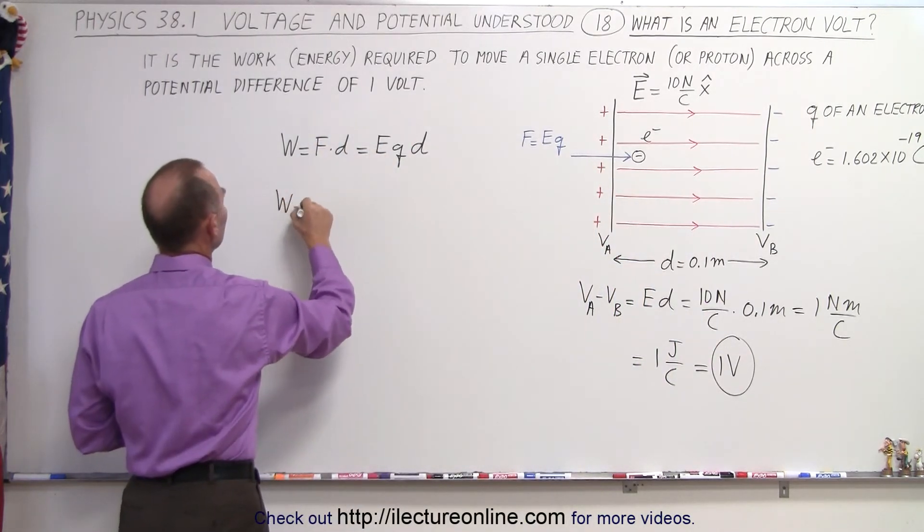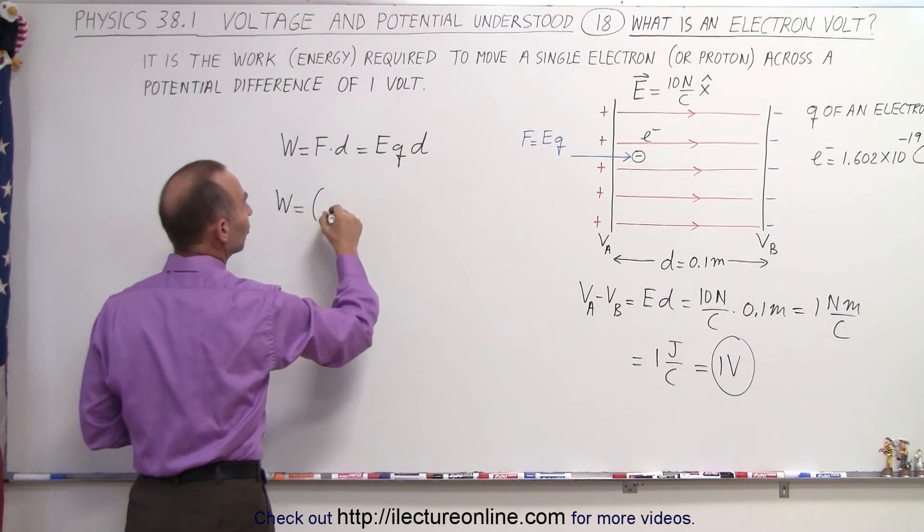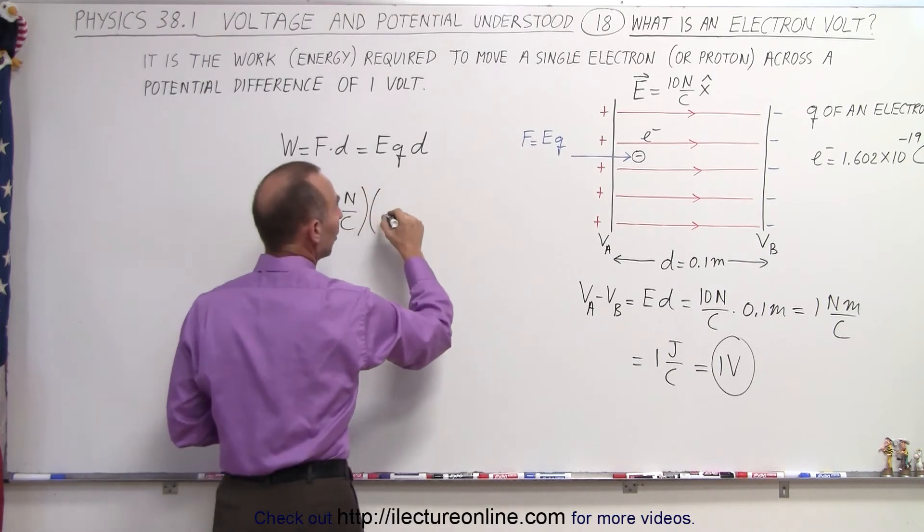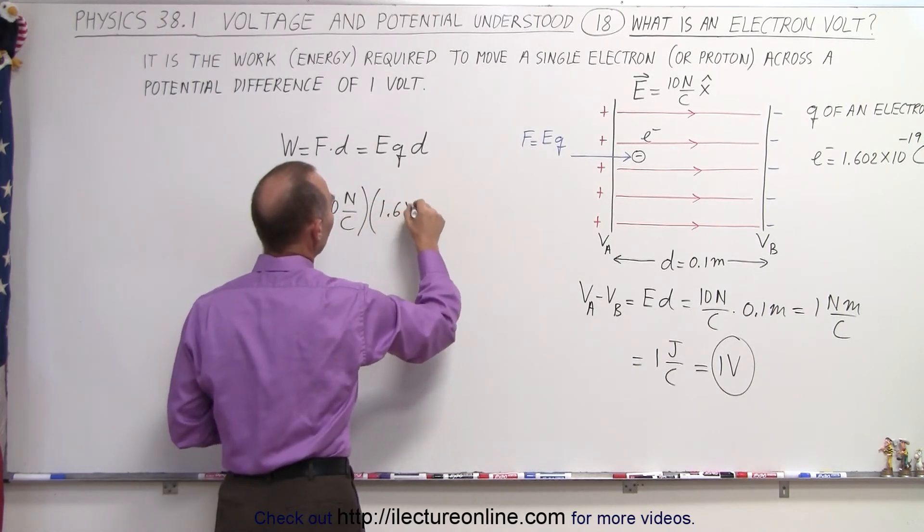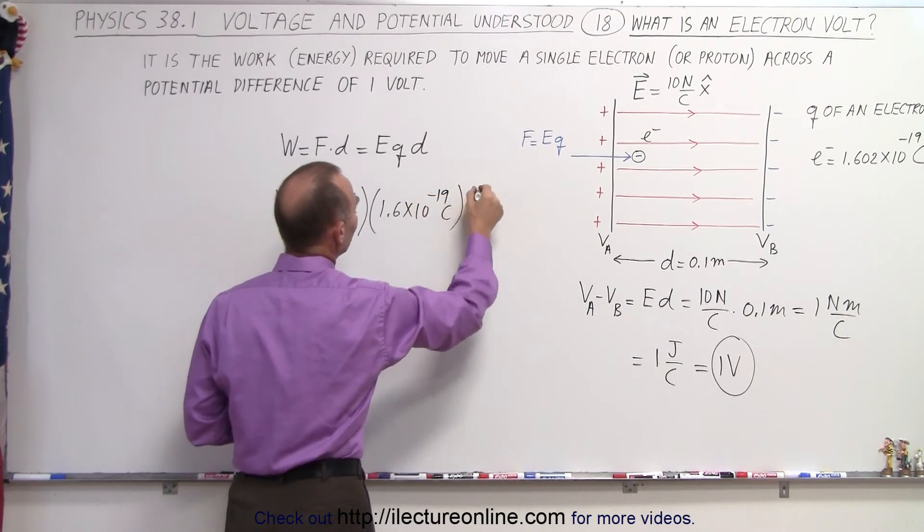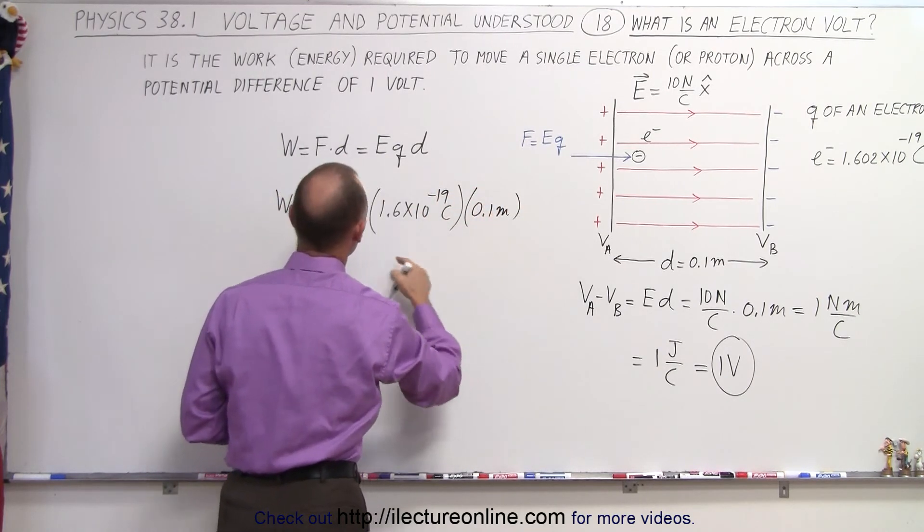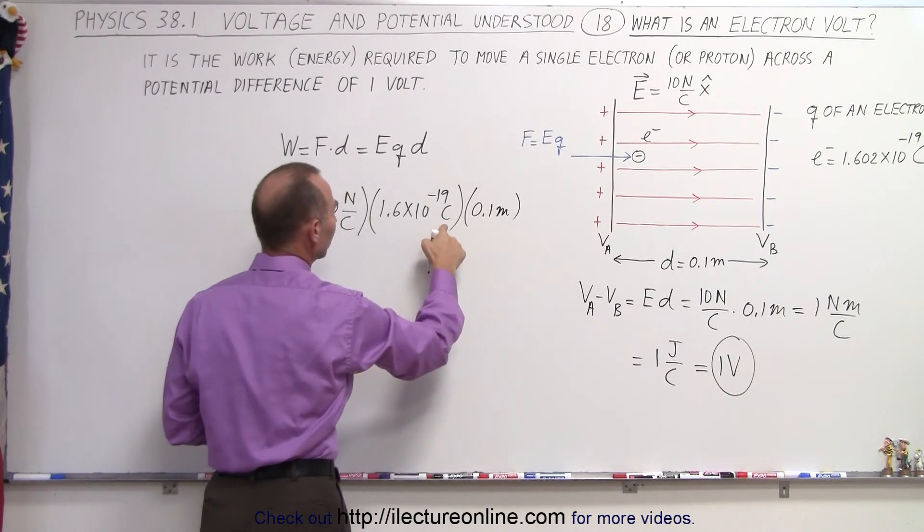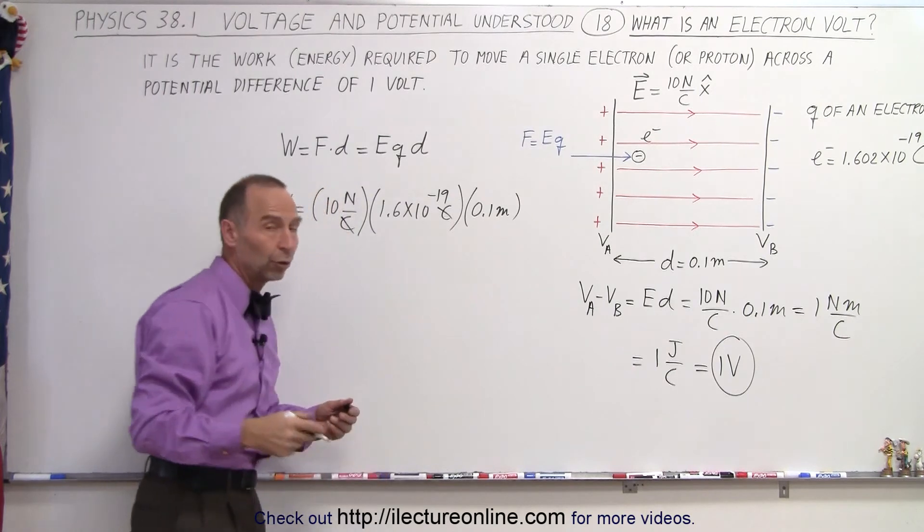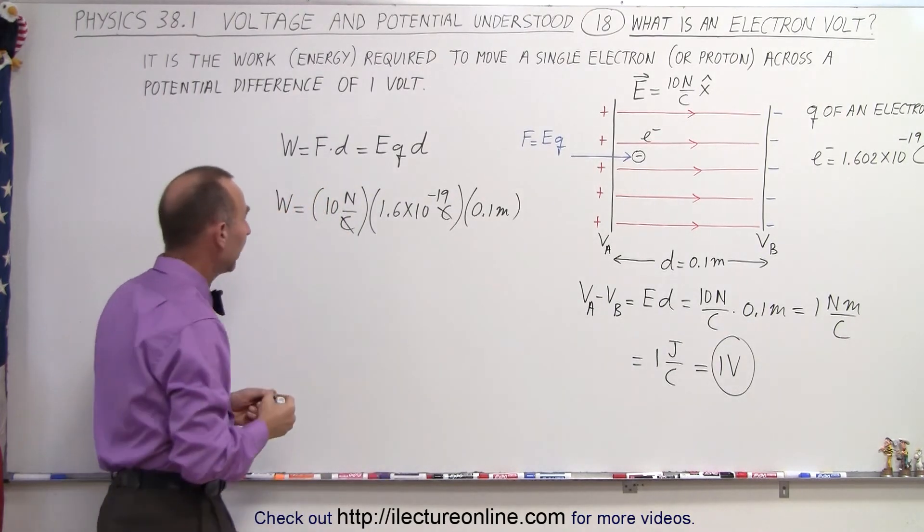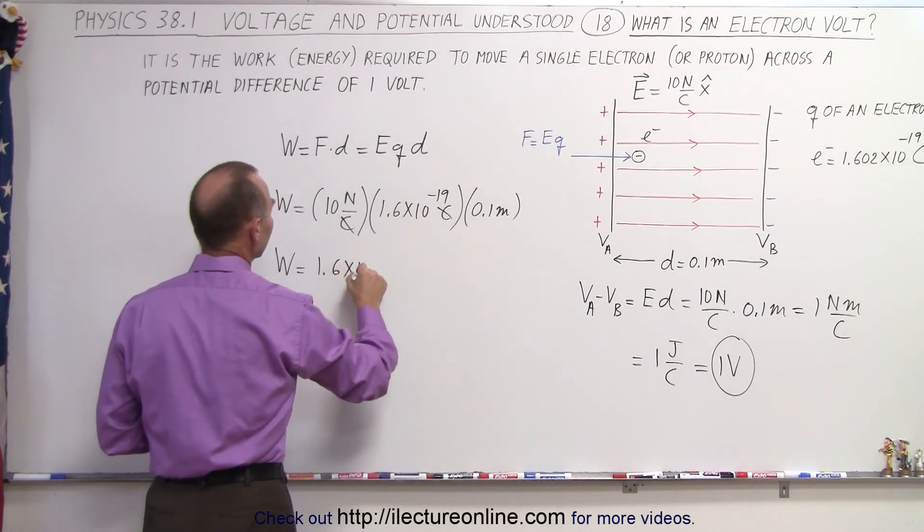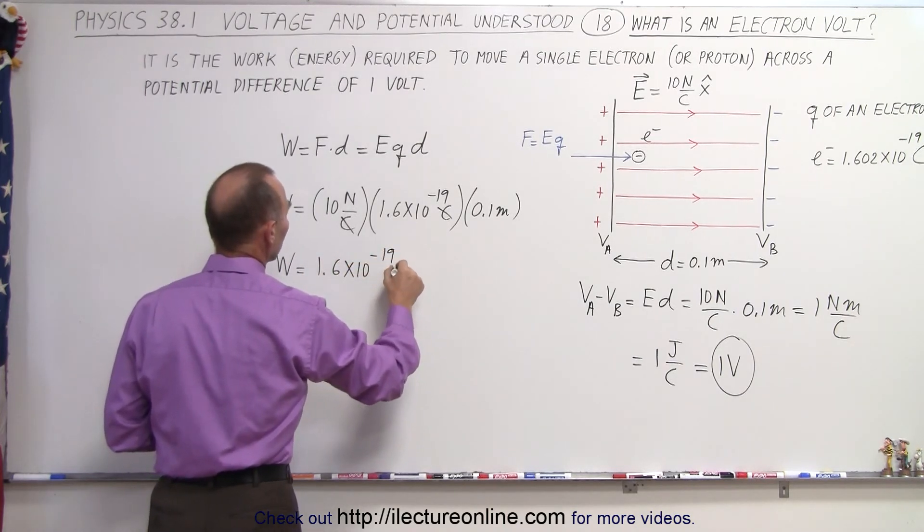So in this case the work done is equal to the electric field, which is 10 newtons per coulomb times the charge, which is 1.6 times 10 to the minus 19 coulombs times the distance, which is 0.1 meter. Notice that coulomb cancels out with coulomb. And then we have newton meter, and of course newton meter is a joule, and that then becomes equal to work is equal to 1.6 times 10 to the minus 19 joules.